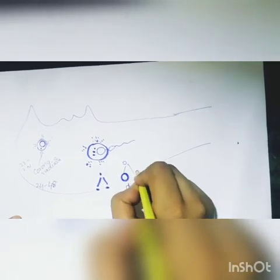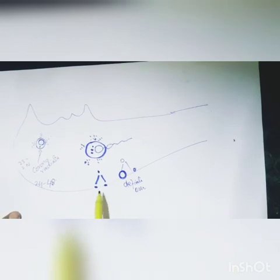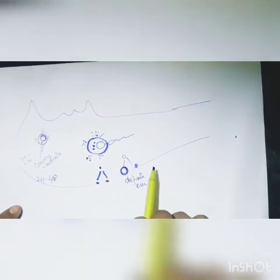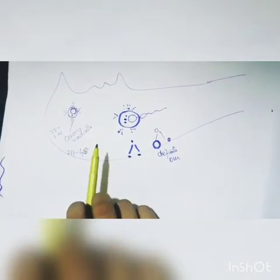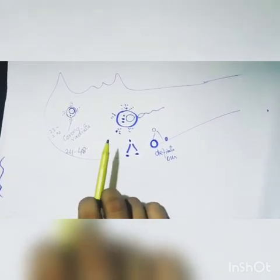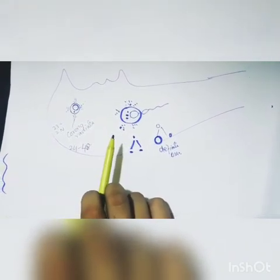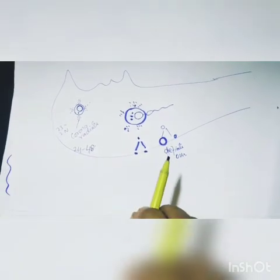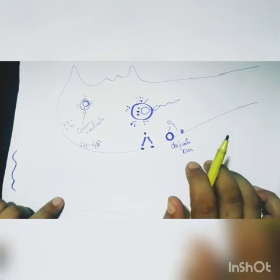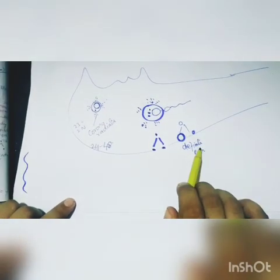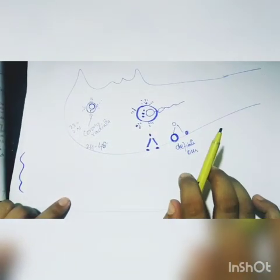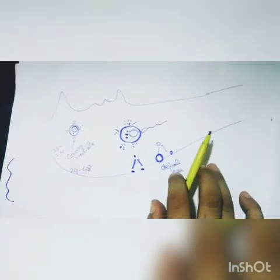Overall, three polar bodies and one definitive ovum are formed. At the time of fertilization: the first meiotic division is completed, the first polar body divides into two further polar bodies, the secondary oocyte becomes the definitive ovum, and another polar body is formed. The product of fertilization that is formed is the zygote.